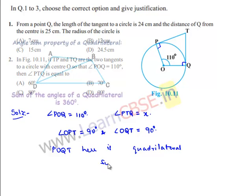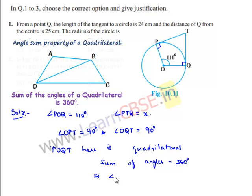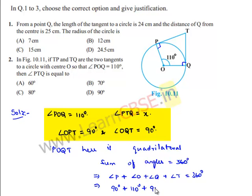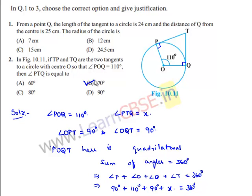The sum of angles in a quadrilateral equals 360 degrees: angle P + angle O + angle Q + angle T = 360°. Substituting: 90° + 110° + 90° + x = 360°, so 290° + x = 360°, giving x = 70°. Option B, 70 degrees, is the correct choice.